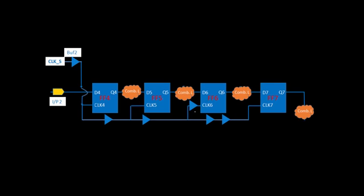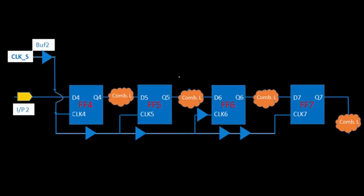In the previous lecture, we discussed that to fix the hold violation between ff5 and ff6, we will not recommend touching any buffer near the clock pin. We will not remove or add any buffer near the clock. It was recommended to remove the buffer from the common path, because that common buffer is not going to affect the next stage or the previous stage.